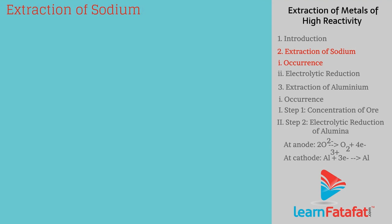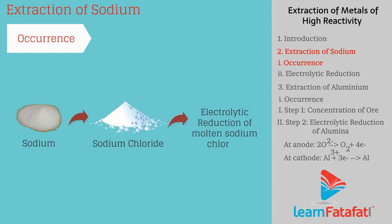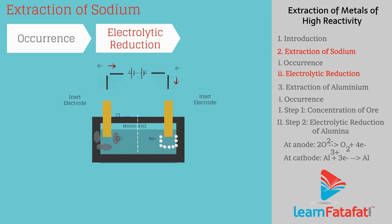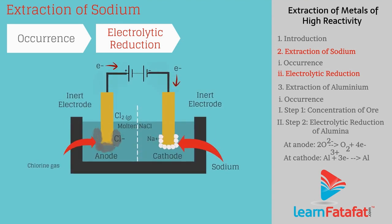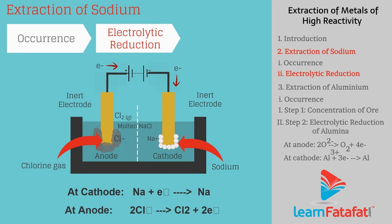Extraction of sodium. Sodium can be obtained from sodium chloride by electrolytic reduction of molten sodium chloride. During electrolysis, sodium is deposited at the cathode and chlorine is liberated at the anode. At cathode: Na⁺ + e⁻ → Na. At anode: 2Cl⁻ → Cl₂ + 2e⁻.